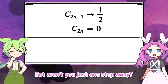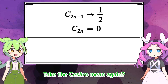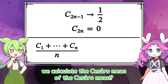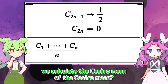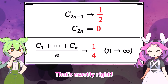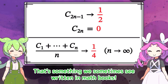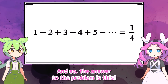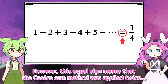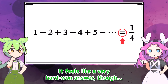It seems you're struggling, but aren't you just one step away? Try taking the Cesaro mean one more time. We calculate the Cesaro mean of the Cesaro mean — that sounds confusing. Could it be that it takes the midpoint between 0 and 1/2 and converges to 1/4? That's exactly right. A rigorous proof — let's leave that to the readers. And so the answer to the problem is 1/4. This equal sign means the Cesaro sum method was applied twice — it means taking the limit of the Cesaro mean of the Cesaro mean.